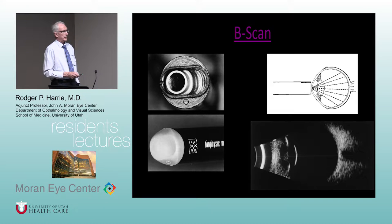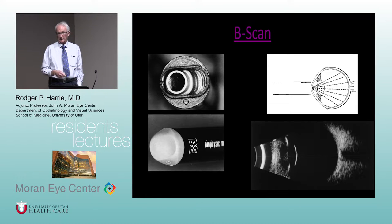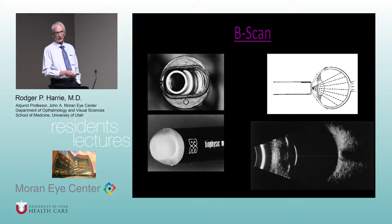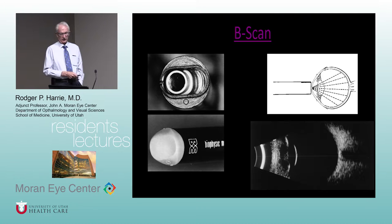A B-scan picture with an axial scan — probe right against the cornea — has what's called a dead zone right at the probe interface, where sound is both transmitting and being picked up, so you lose information there. That's why we use immersion techniques to back the probe off and see structures in that dead zone area. Once past the dead zone, you can see the anterior chamber, iris, back of the lens, and proceeding through the eye to the optic nerve.